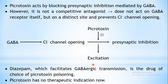Because picrotoxin blocks GABA's pre-synaptic inhibition, the opposite action — excitation — is seen. Picrotoxin has no therapeutic indication; it is also of toxicological importance and used to induce convulsions in animals. Treatment of picrotoxin toxicity uses diazepam or benzodiazepines, which have GABA facilitatory action — they promote GABA binding to its receptor, open the chloride channel, produce inhibition, and help control the excitation and convulsions.